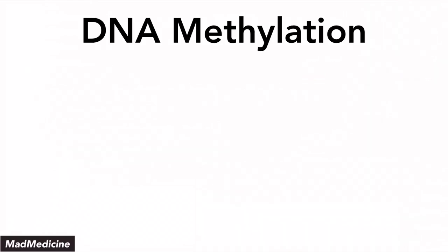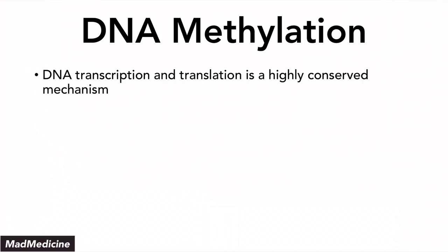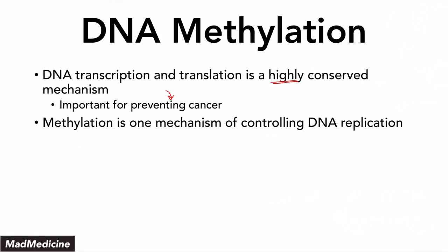When it comes to DNA methylation, it's really important to understand that our DNA is the basis of replication — it's our genetic code. DNA transcription and translation are very highly conserved mechanisms. If DNA methylation did not exist and these processes were not highly conserved, we would be able to create cancer relatively easily. Therefore, DNA methylation is one way of preventing cancer from forming. Methylation is one mechanism — among many — of controlling DNA replication.